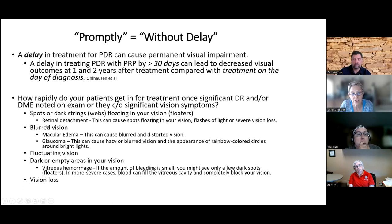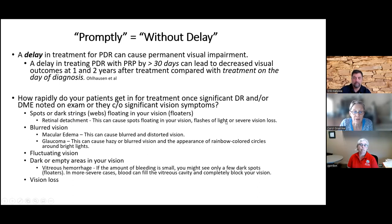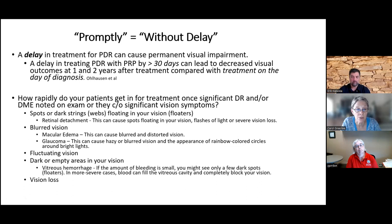If a patient calls in or comes to you with warning symptoms suggesting they may be on the way to vision loss — seeing a lot of spots, dark strings, or webs floating in their vision — very bad webs can indicate retinal detachment, while milder webs may be vitreous detachment, though you'd want to rule out retinal detachment, which often presents with flashes of light. These patients need to be seen ASAP. Blurred or fluctuating vision can be a sign of macular edema or glaucoma. Black spots or total vision loss can indicate vitreous hemorrhage.